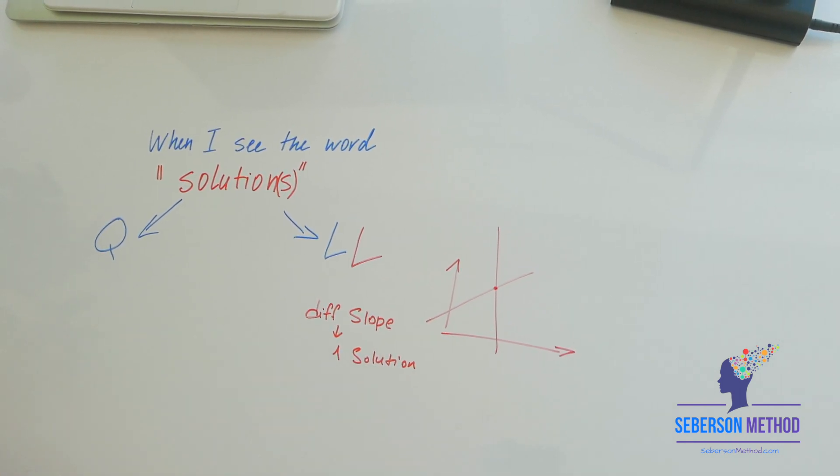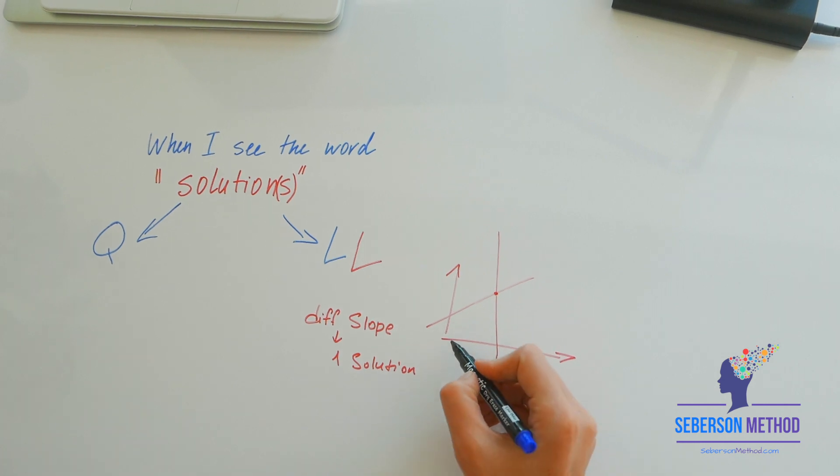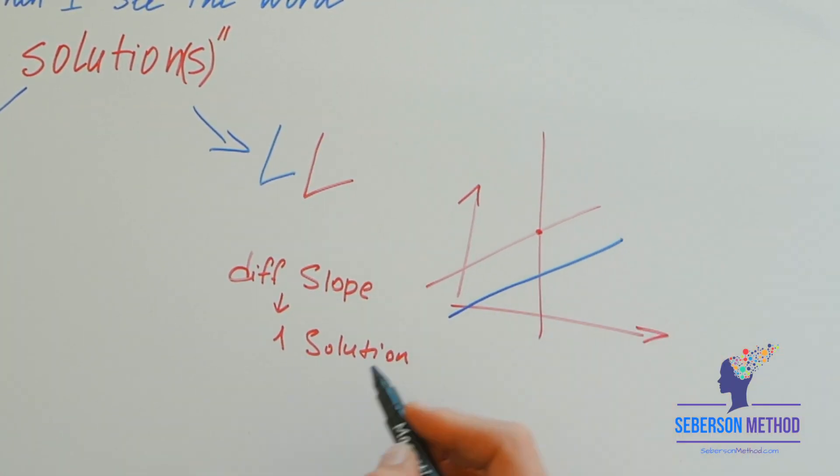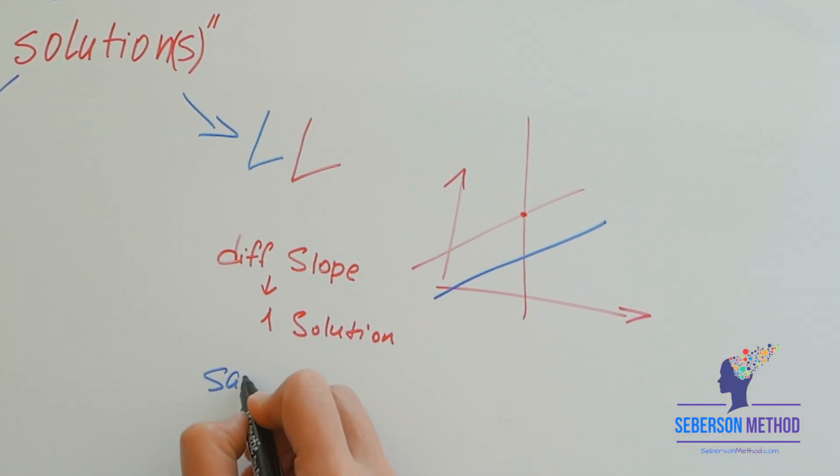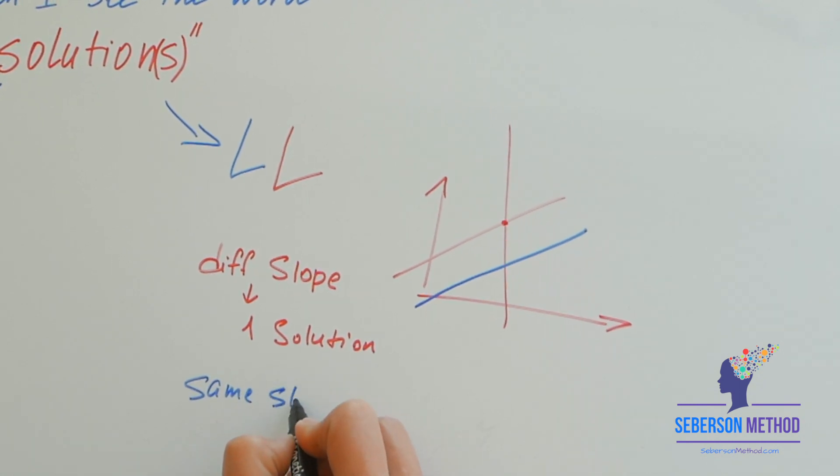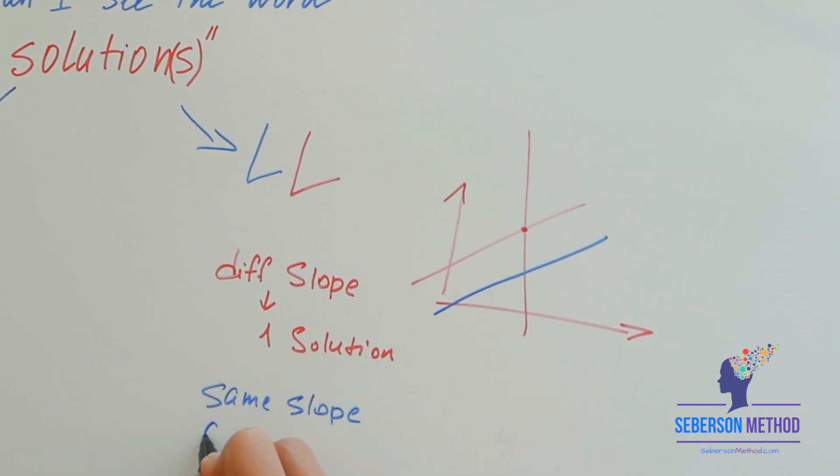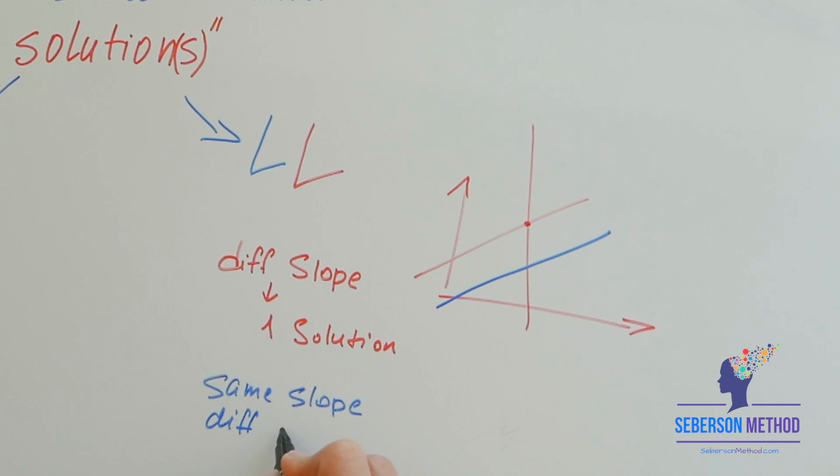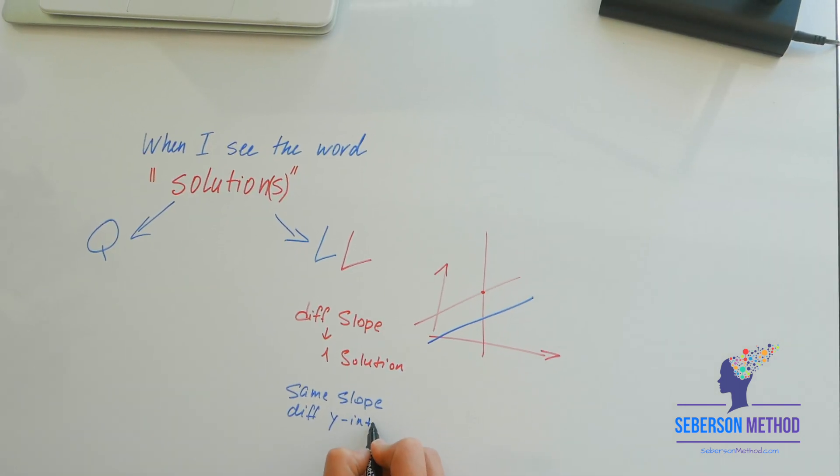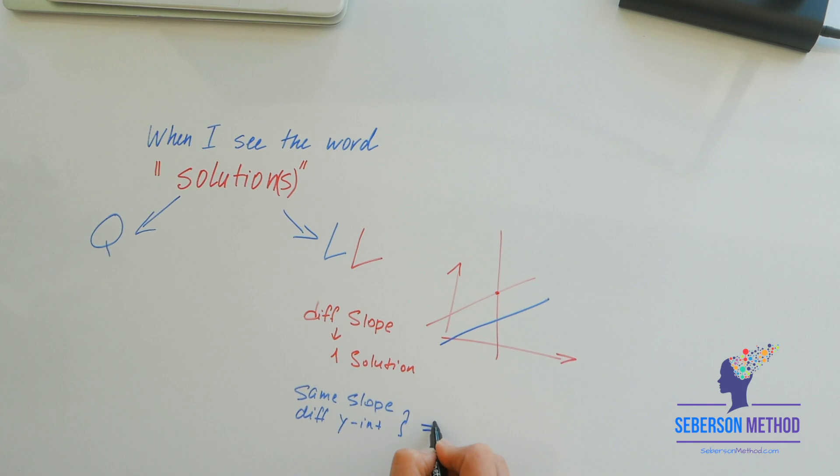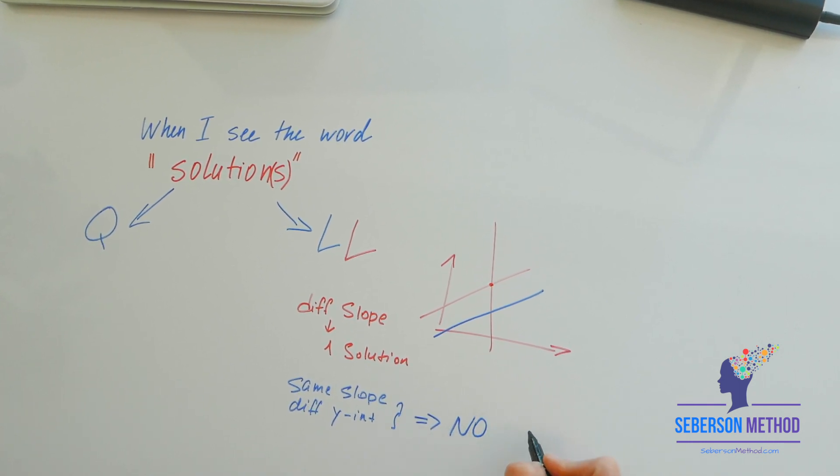And when two linear equations have the same slope, but different y-intercept, this is going to be no solution.